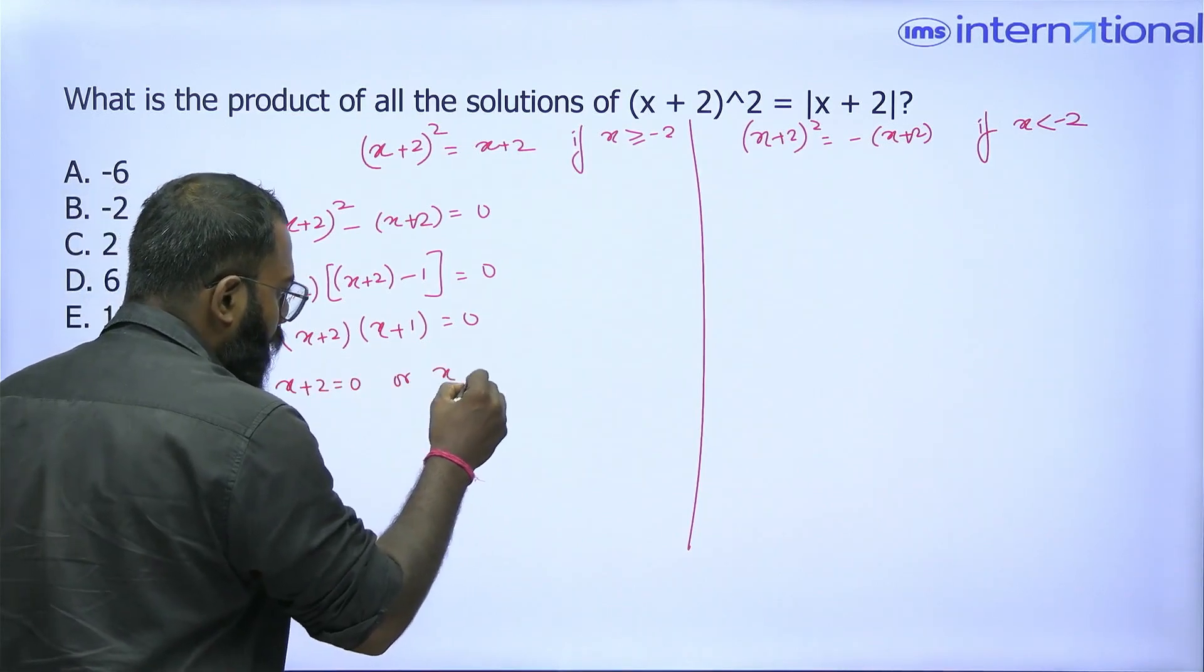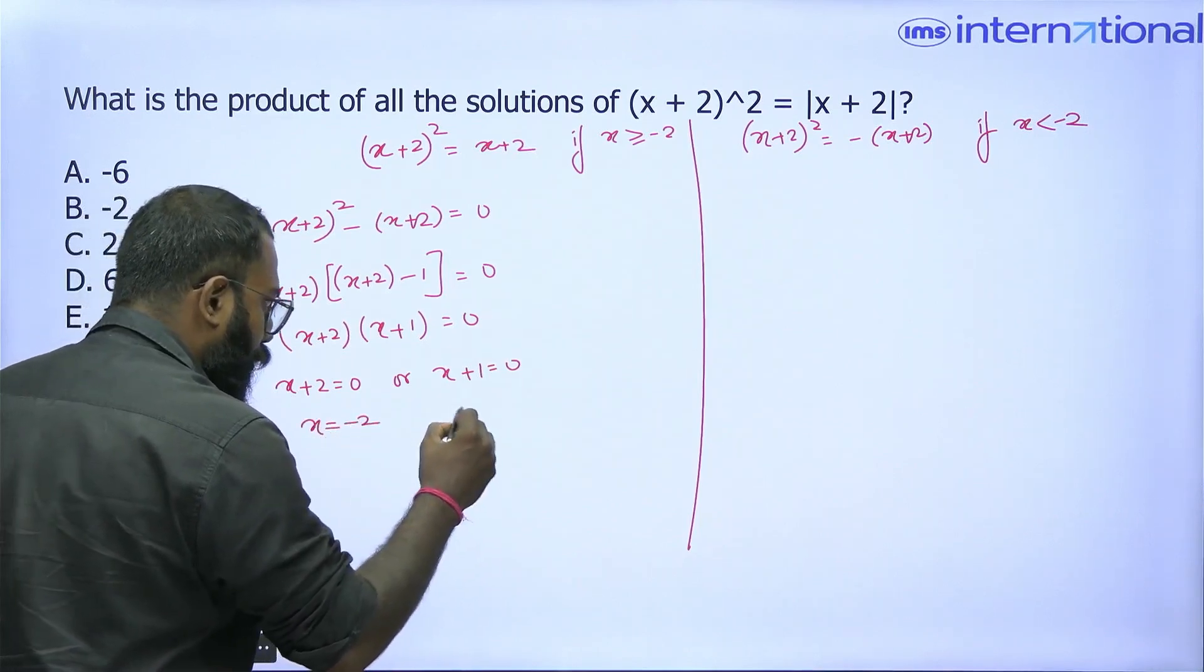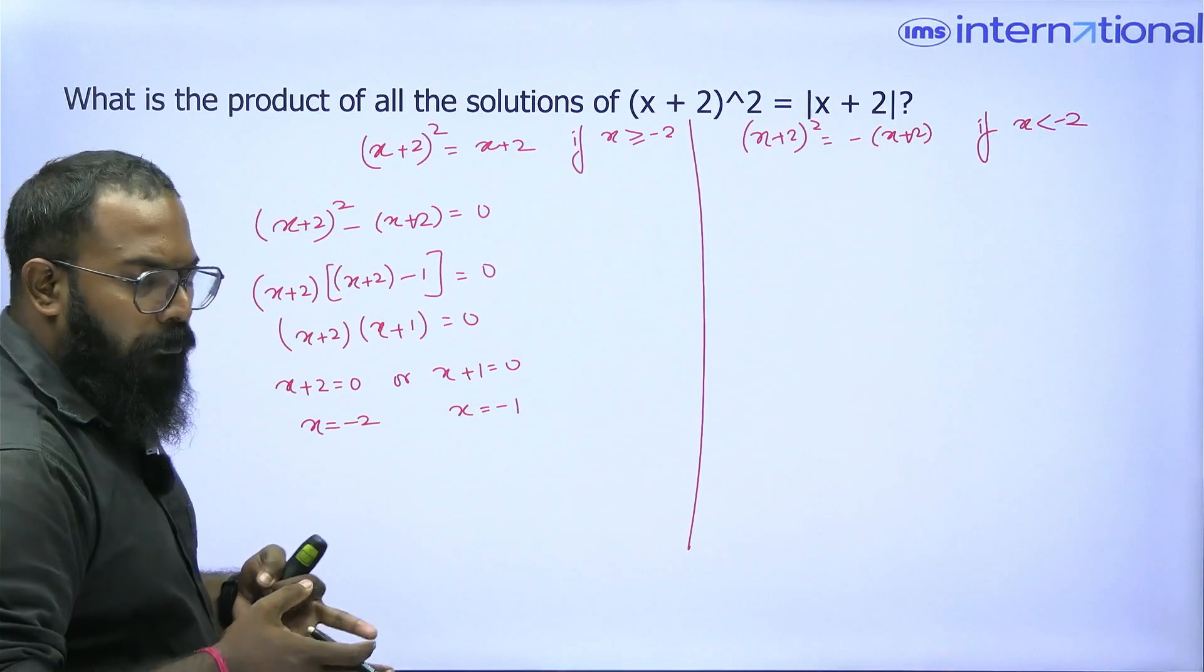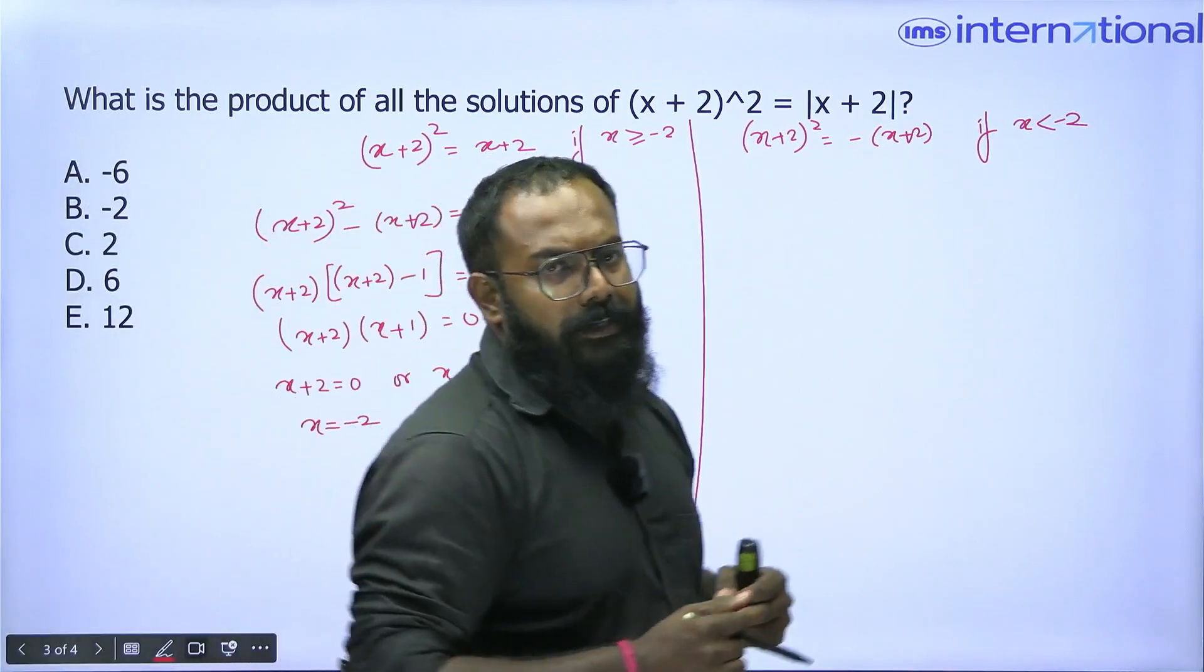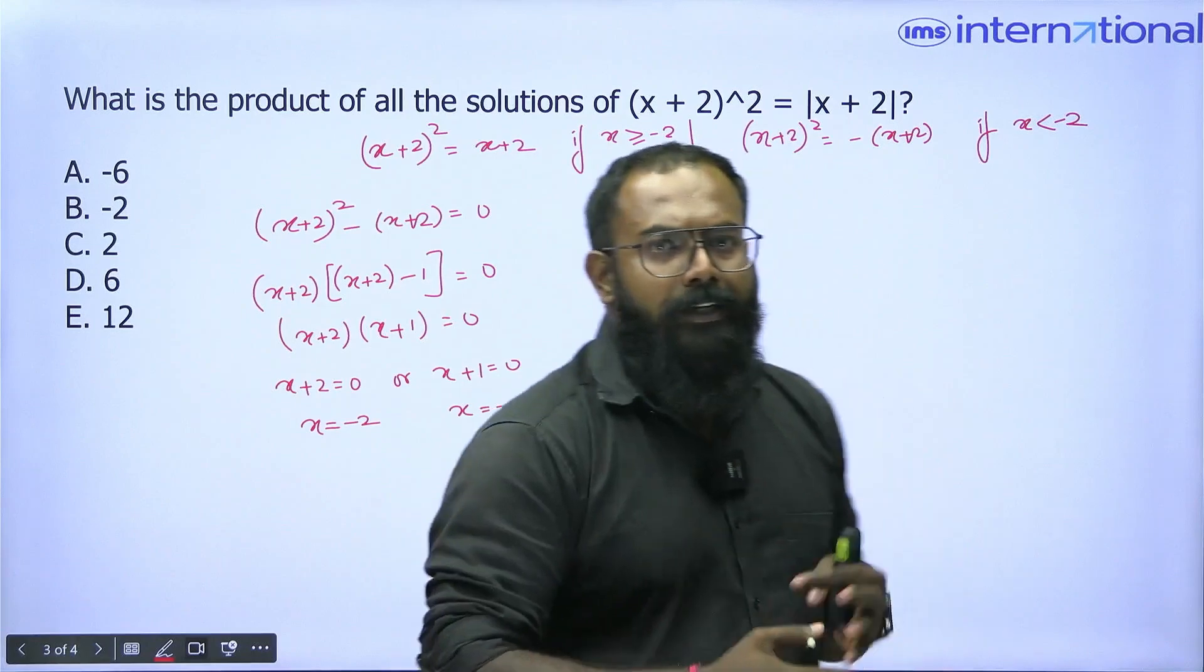That means either x + 2 = 0 or x + 1 = 0. When x + 2 is 0, x equals -2. When x + 1 is 0, x equals -1. So I get two different values of x in this case, case 1. First one is -1, the next one is -2. Let's go ahead and discuss the next case.